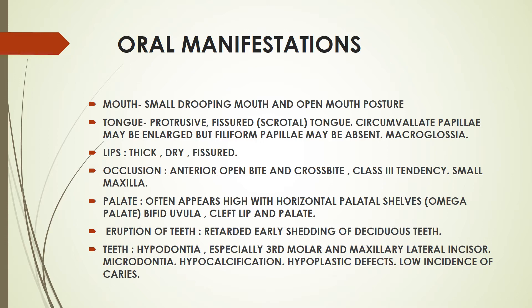The palate often appears high with a horizontal palatal shelf, known as omega palate, and there is bifid uvula; the chances of cleft lip and palate are more in Down syndrome. The eruption of teeth is retarded and there is early shedding of deciduous teeth. There is hypodontia - missing teeth - especially third molars and maxillary lateral incisors. There is also microdontia, hypocalcification, hypoplastic defects, and usually a low incidence of caries in Down syndrome patients.